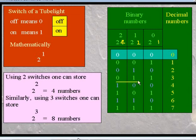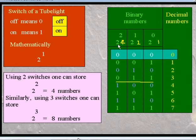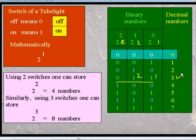In 0 1 1, this 1 means the switch is ON, this 1 means the switch is ON, and this 0 means the switch is OFF. The first 1 means 2 raised to power 0, which equals 1. The second 1 means 2 raised to power 1, which equals 2. Hence 2 plus 1 equals 3. So binary 0 1 1 equals decimal 3.